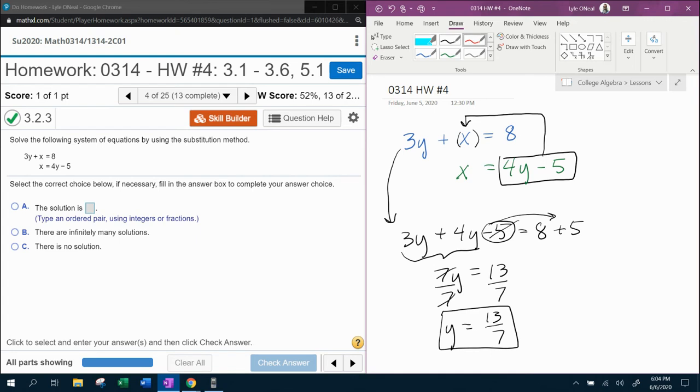Now that I know y, I need to know x. And if you notice right here, I've got x by itself. So I'm going to do substitution again, this time replacing y with what it's equal to. So that's going to give me x equals 4 times 13 sevenths minus 5.